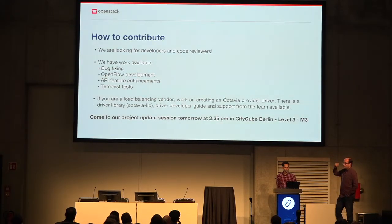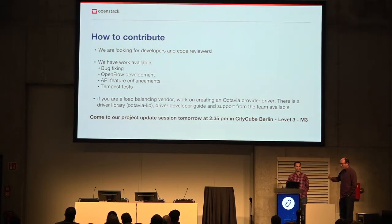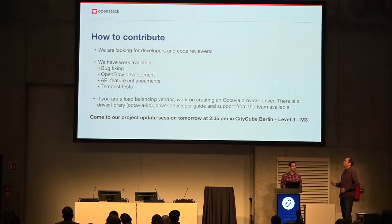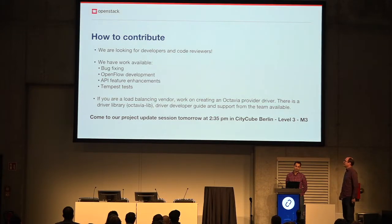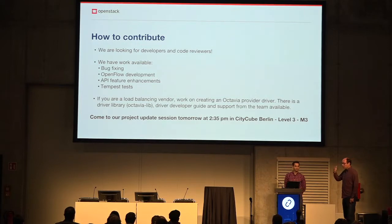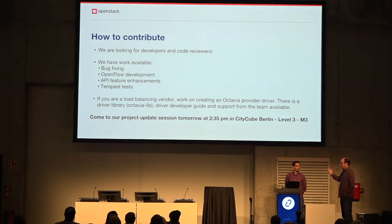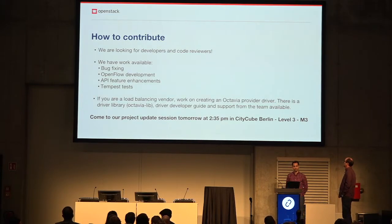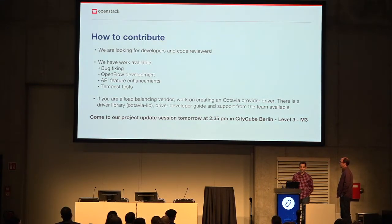If you're using installers — OpenStack Ansible, TripleO, Kolla, Helm — all of them except possibly Charms support Octavia now, and Charms is getting Octavia support. We're always looking for more people to help: developers, code reviewers, bug fixing, OpenFlow, Tempest testing, and documentation. If you're a load balancing vendor, write a driver for us. We now have a driver library and a driver developer guide — more details in the project update session tomorrow.